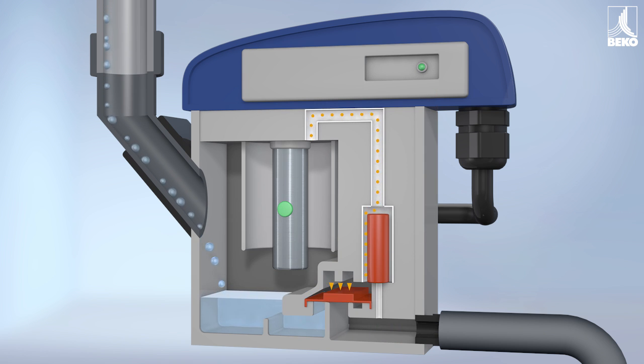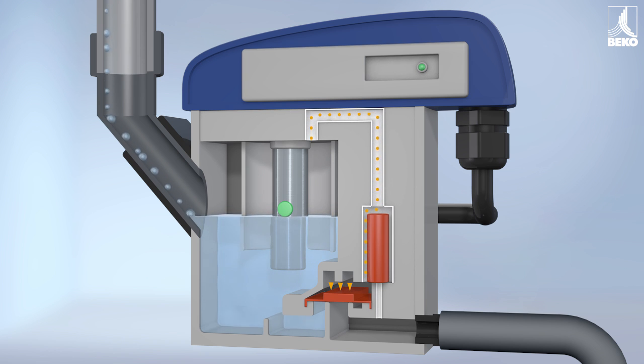Once again, as the condensate flows in, the membrane remains closed due to system pressure. Its larger upper surface provides the necessary closing force on the valve seat and seals it tightly.